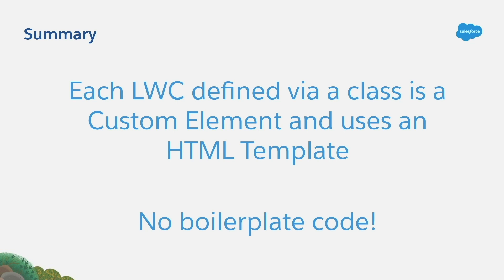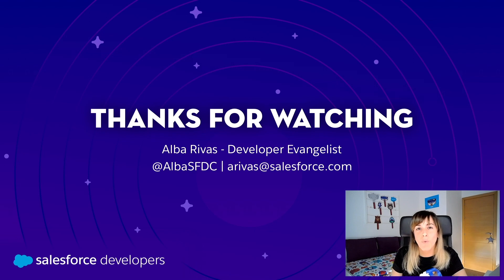Summarizing, we have seen in this quick take how each Lightning Web Component that is defined via a class that extends Lightning Element is going to be a custom element and it's going to use an HTML template, because the Lightning Web Component framework is going to create all that boilerplate code for you behind the scenes, and you won't have to take care of that. With that, I want to thank you for watching the video. If you enjoyed it, please give it a like and make sure to subscribe to the Salesforce Developers YouTube channel because we will continue publishing more videos like this one. Bye bye.